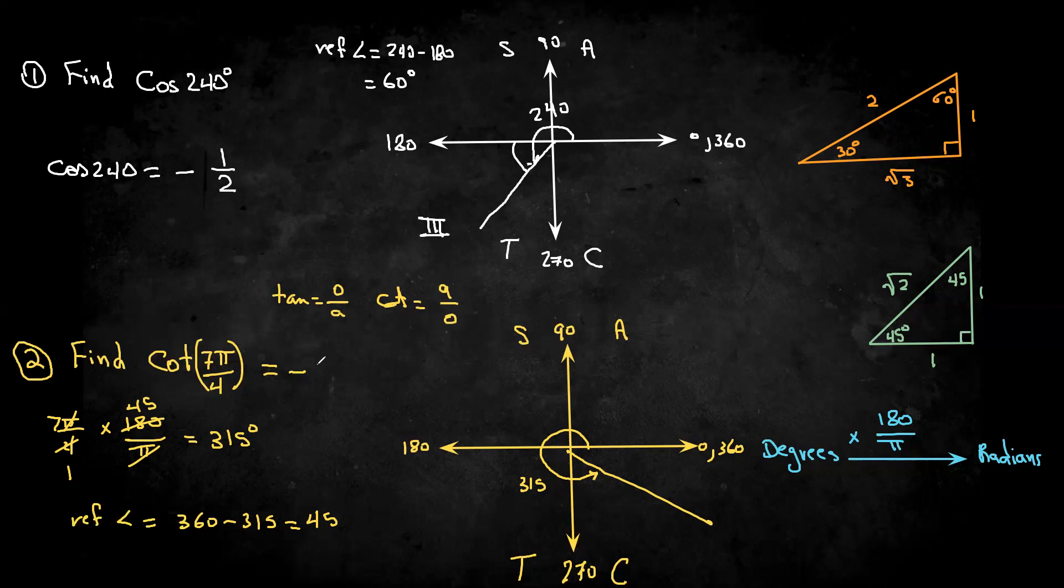So the answer for cotangent 7 pi over 4 is going to be negative 1. And that's basically the simple way of doing it.